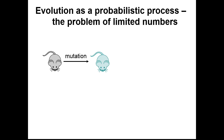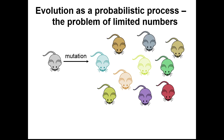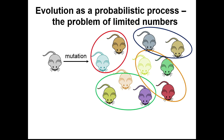We really want to know, if we want to understand evolution as the probabilistic process that it is, what are all of the other possible adaptive mutations that could have occurred that we didn't actually get to observe? These could be mutations in other genes that also influence coat color, or mutations in metabolism, fertility, or other traits. In particular, we're trying to understand whether these possible other adaptive mutations can be grouped into similar genotypes or similar fitness effects, as a way of better understanding the evolutionary process and all of the options available to it.